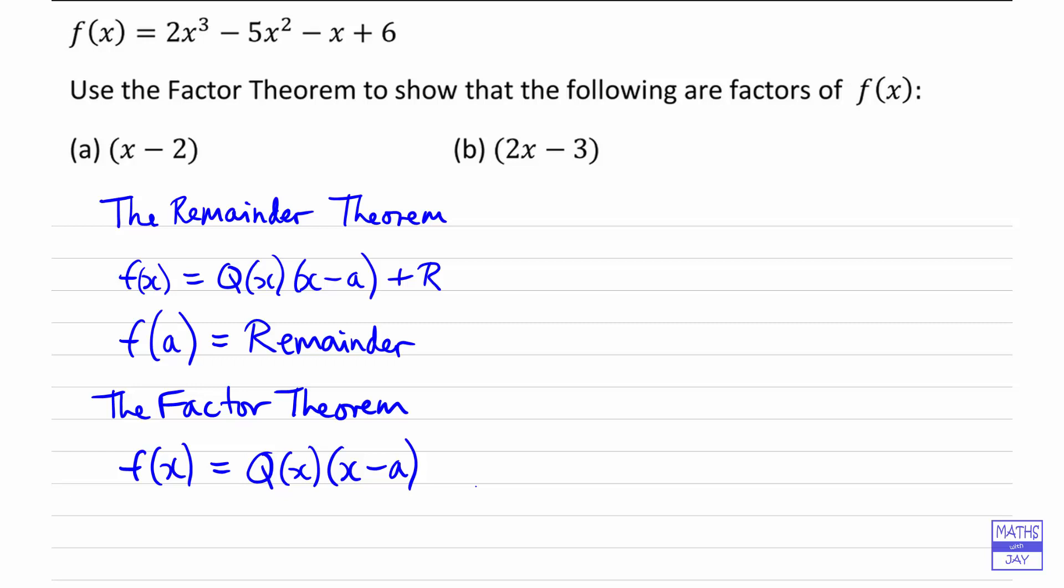That means that when we substitute in a for x, f(a) is just going to be zero because the x minus a will be zero. So that's all we need to do. We just substitute in a for x and put f(a) equal to zero.